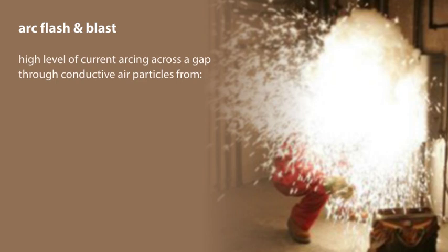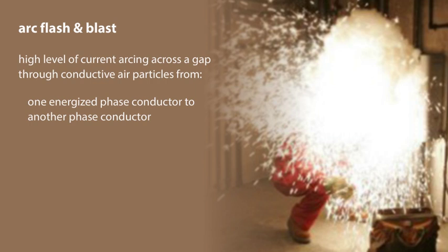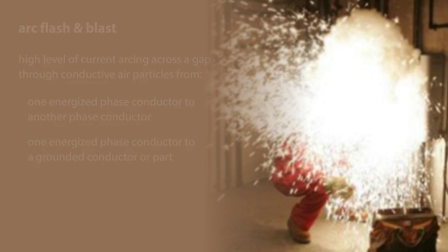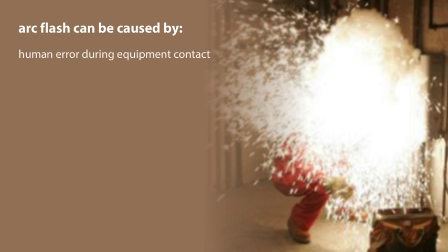An arc flash and blast are the results of a high level of current arcing across a gap through conductive air particles from one energized phase conductor to another phase conductor, or from one energized phase conductor to a grounded conductor or grounded part. Arc flashes can be caused by human error during equipment contact — screwdrivers, meter leads, and other electrical tasks.